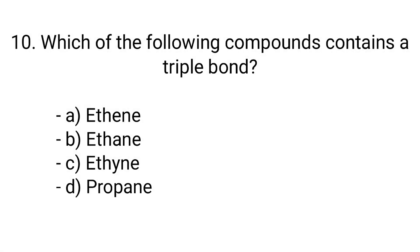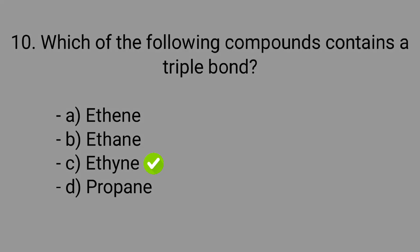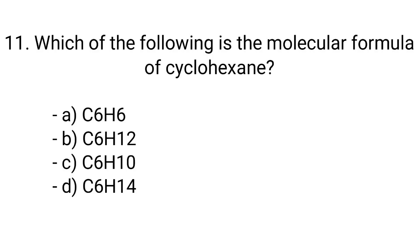Question number 10. Which of the following compounds contains a triple bond? Option A: Ethane, B: Ethene, C: Ethyne, D: Propane. The correct answer is option C, Ethyne.